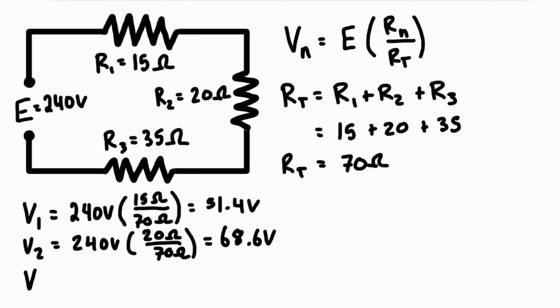And same thing, we can do it for the voltage drop across resistor three. So again, we get 240 volts, that's source voltage, times 35 ohms over 70 ohms. And when we crunch that in your calculator, we just see that this ratio was just 0.5, so it's 120 volts. That can be just a really quick way to calculate voltage drop and save you some time on an exam.